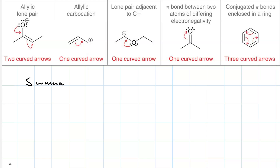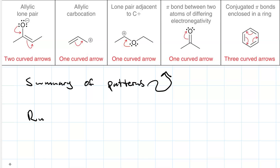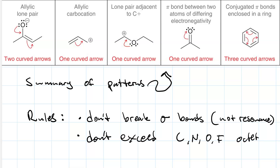Here is a summary of the different patterns. Just remember a couple of rules when drawing curved arrows. The first rule is: don't break sigma bonds. As long as the tail of your curved arrow is either on a lone pair or a pi bond, you'll be in good shape. When we're breaking sigma bonds, we're actually doing reaction mechanisms, not resonance. Another really important rule is that you can't exceed the octet rule for any second-row element — carbon, nitrogen, oxygen, or fluorine. The only time it's okay to not have an octet is with a carbocation, which is a sextet.